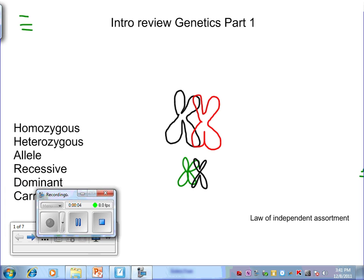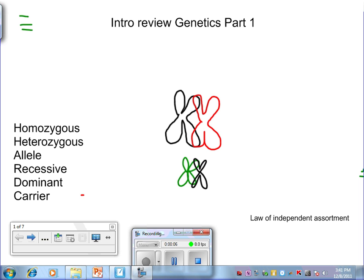Okay, welcome to the first review session on genetics. I threw some words up here that are important for you, like homozygous, heterozygous, allele, recessive, dominant, carrier. All these are terms that you definitely need to know, and the AP expects that you know those right off the get-go.